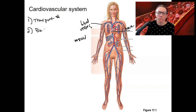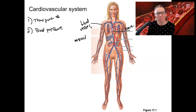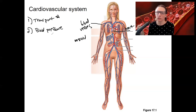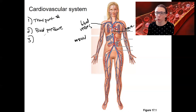Next is blood pressure. You usually think about blood pressure being related to your heart and blood vessels, and it is — but you also need the blood, the fluid, to maintain pressure. We'll talk about this mostly when we get to blood vessels. Maintaining blood pressure is key for your body to get blood flow; your tissues need to be perfused with blood, and especially your brain. The cardiovascular system needs to maintain blood flow via blood pressure, particularly to the brain.